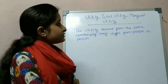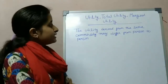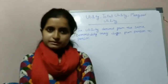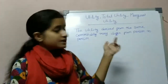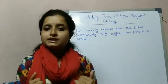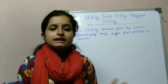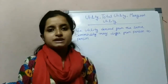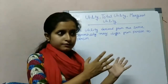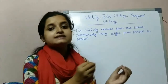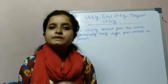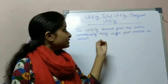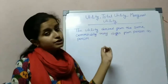This utility concept is a bit confusing. The utility derived from the same commodity may differ from person to person. For example, this whiteboard has utility for me, but for another person like a farmer, this board has no utility. So utility from the same commodity varies from person to person.